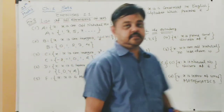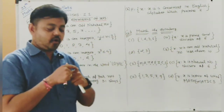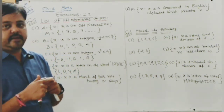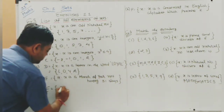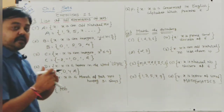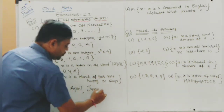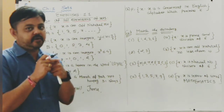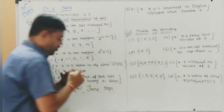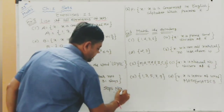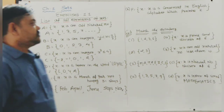Set E = {x : x is a month of the year not having 31 days}. Months with 31 days are on the 'top' (knuckle months). Months not having 31 days: February, April, June, September, November. July and August have 31 days so they are excluded. October and December are also excluded.